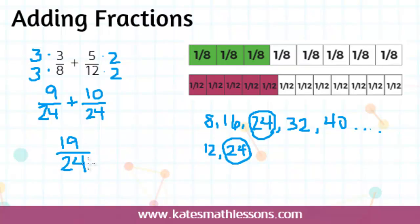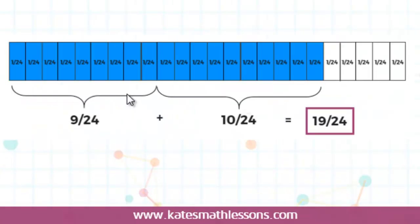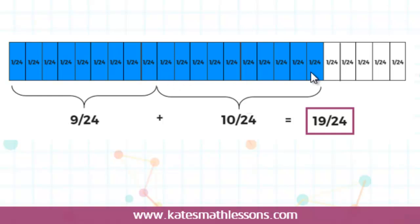Let's look at a picture to help visualize this. Here's the whole, and it's been split into 24 equal pieces. Our first fraction was the same as 9/24, so we had 9 of these little 24th pieces. Our second fraction was the same as 10/24 — 10 more of those little pieces. Counting up all the 24th pieces, 9 plus 10 gives us a total of 19, so we have 19/24.